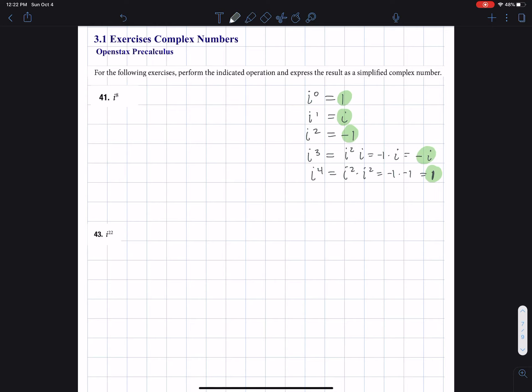So look, if I have i to the fifth, this is i to the fourth times i. Should I show that little step there? i to the fourth is one times i, so I get i.